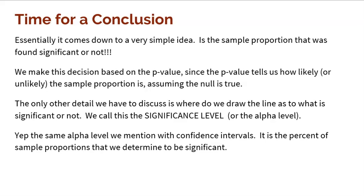Essentially it comes down to a very simple idea: is the sample proportion that was found significant or not? We make this decision based on the p-value, since the p-value tells us how likely or unlikely the sample proportion is, assuming the null is true. The only other detail is where do we draw the line as to what's significant or not?